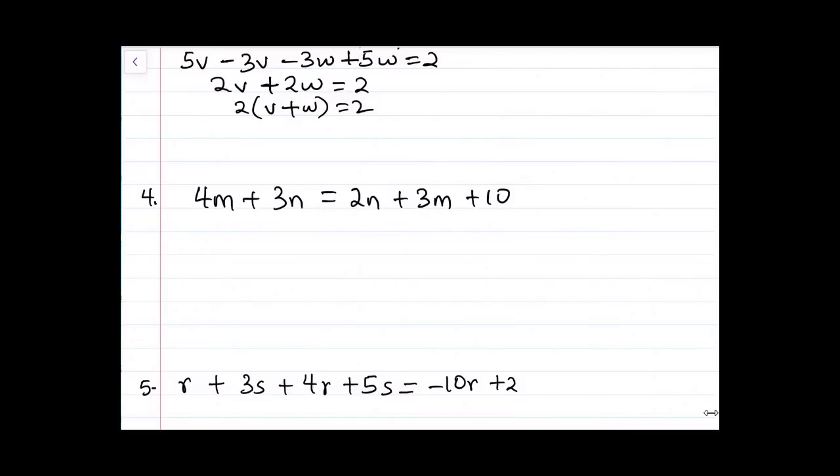Now we have 4m plus 3n equals 2n plus 3m plus 10. This looks very tricky. And there are two ways by which you can approach question number 4. But we're going to apply a very simple approach. So you can tell me what would be the first thing we want to do. Man, you got that right. We want to collect the like terms.